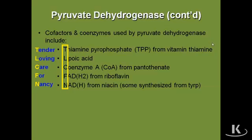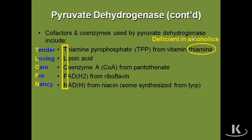Another reason why this enzyme is important for national boards is that one of the vitamins used to make a coenzyme PDH needs is thiamine. You must know that thiamine is deficient in alcoholics. Alcohol inhibits thiamine absorption in the mucosa, and there is very little thiamine in alcoholic beverages, so a long-term alcoholic is prone to thiamine deficiency.